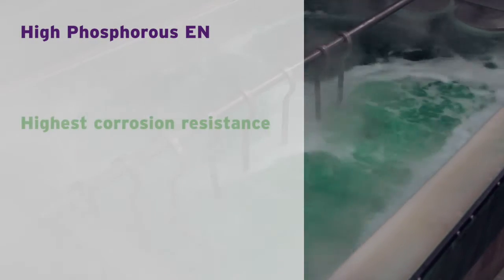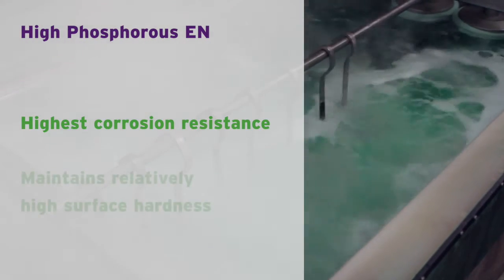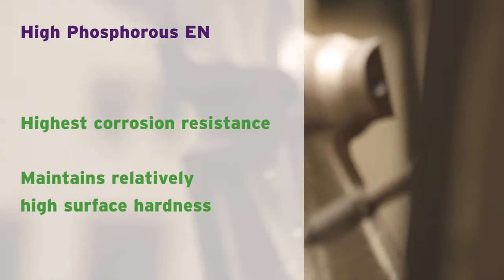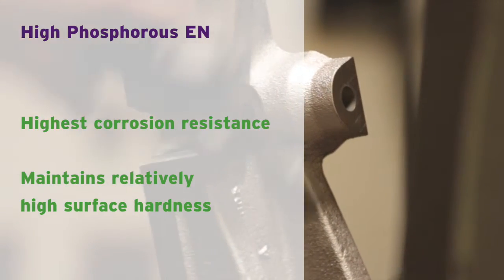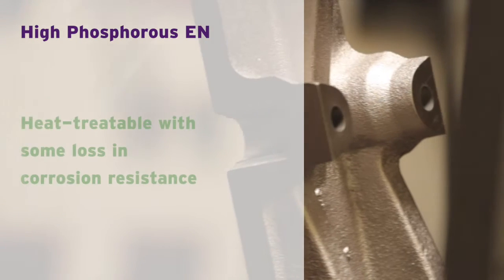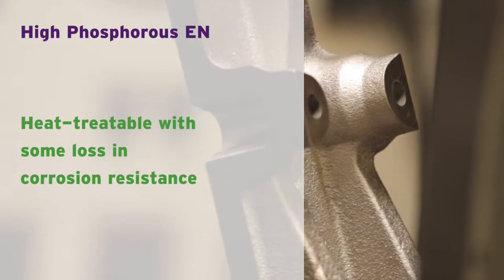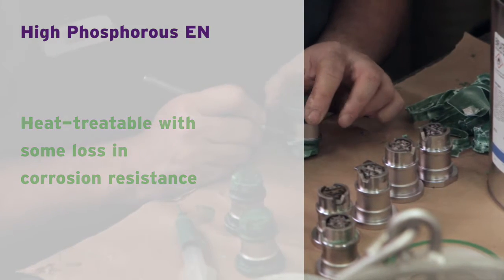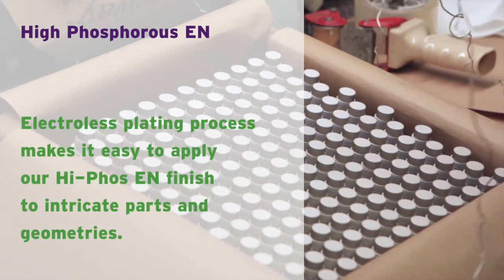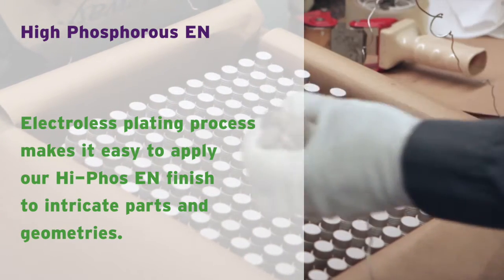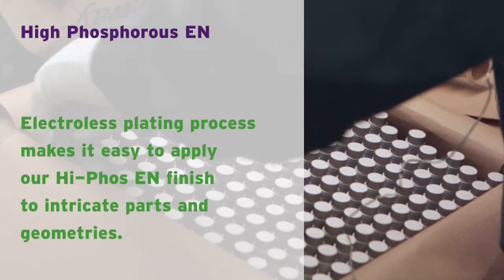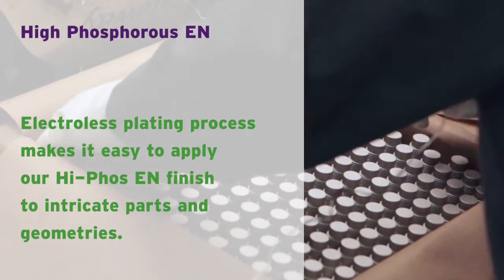Our high phosphorus finish is our most corrosion resistant finish. It still retains a fairly hard surface and has the advantage of being heat treatable with some loss in corrosion resistance. Combined with our electroless plating process, our high phosphorus finish makes it possible to provide our customers with extreme corrosion resistance for even their most intricate parts.